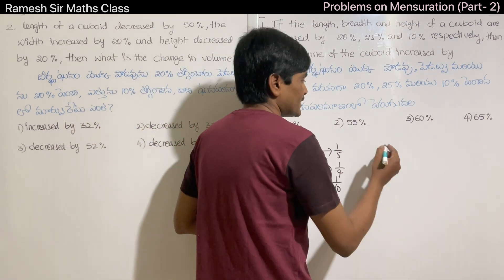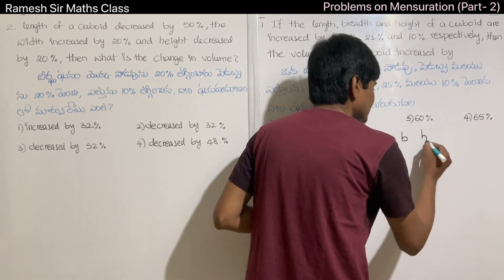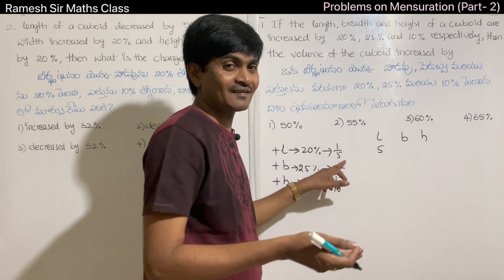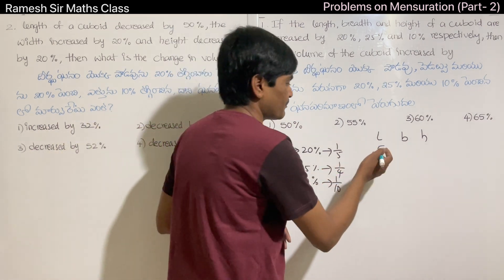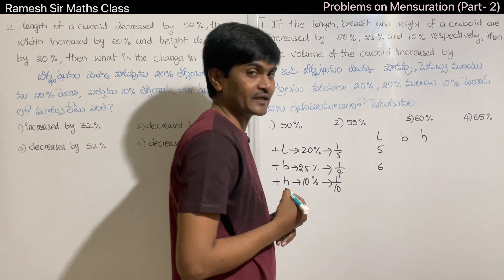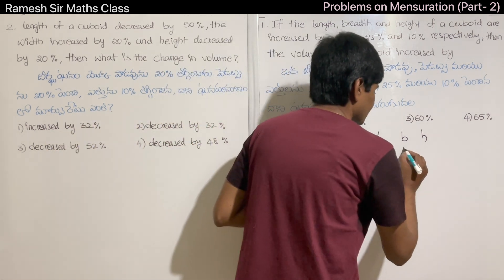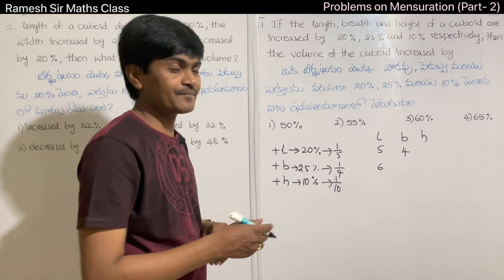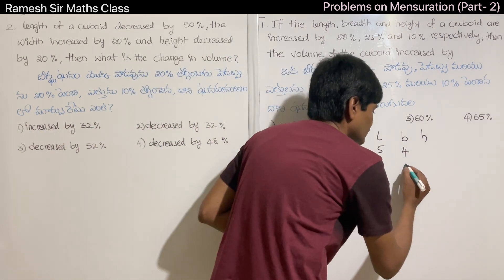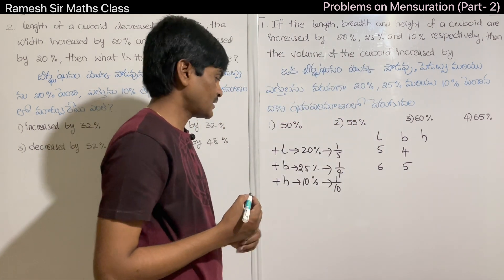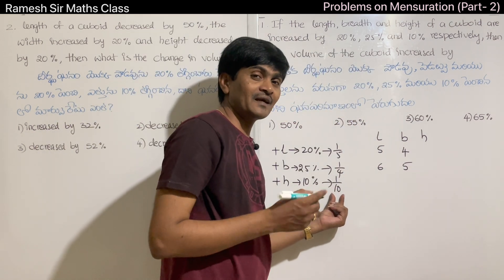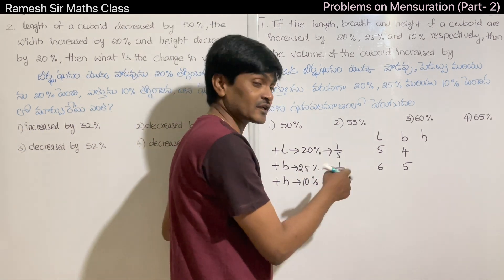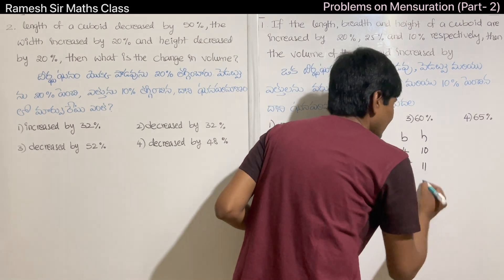The volume formula is L×B×H. If the original measurements are in units: for length, 1/5 increase means 5 units become 6; for breadth, 1/4 increase means 4 units become 5; for height, 10% increase means 10 units become 11. So in the numerator we have 11 out.